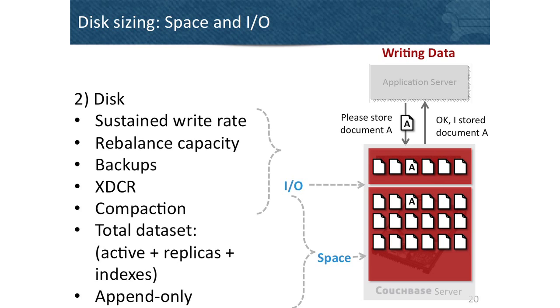For disk sizing, RAM is all about space — but with disk you have to consider both the amount of data and the I/O required. Sustained write capacity, rebalancing, taking backups, cross-data-center replication, and compaction all take disk I/O. From a space perspective, compaction and the total amount of data — both actual data and indexes — must be accounted for. The more nodes you have, the more disks and disk throughput you have; you don't need one system with a massive disk.